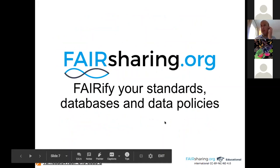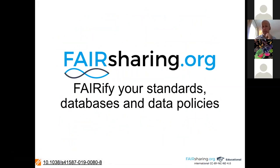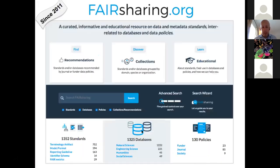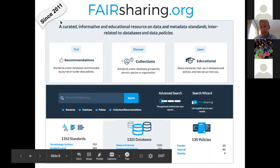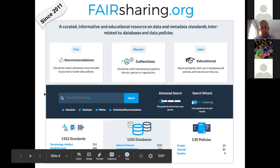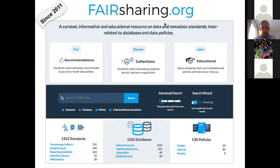FAIRsharing — for more information there's a link to our latest paper. If you go to fairsharing.org, this is our homepage. We've been running since 2011 — nine years. In the center of the page you can see our search tools: a simple search, advanced search, and a wizard. At the bottom of the page you can see our standards, databases, and policies — the number of objects in FAIRsharing split into different types of standards and different disciplines like natural sciences and engineering sciences.